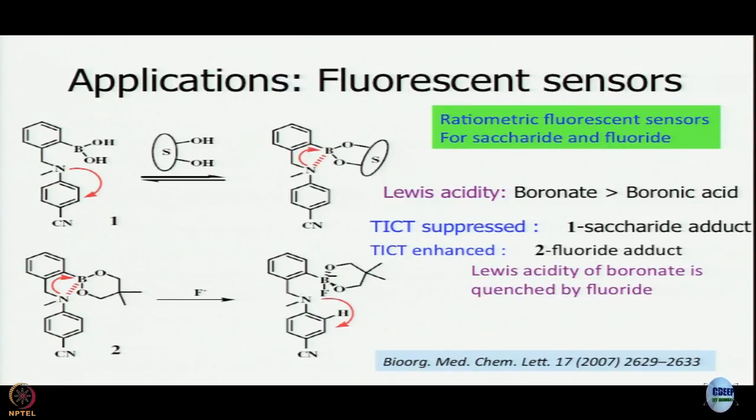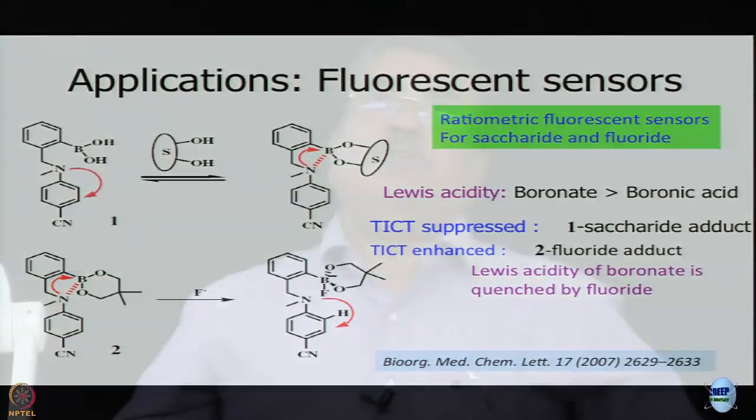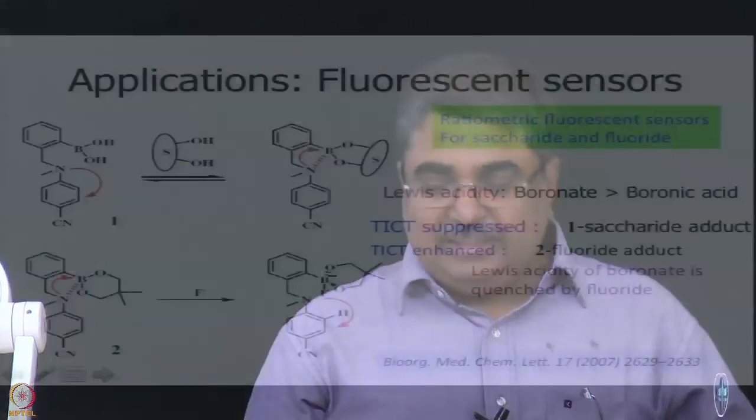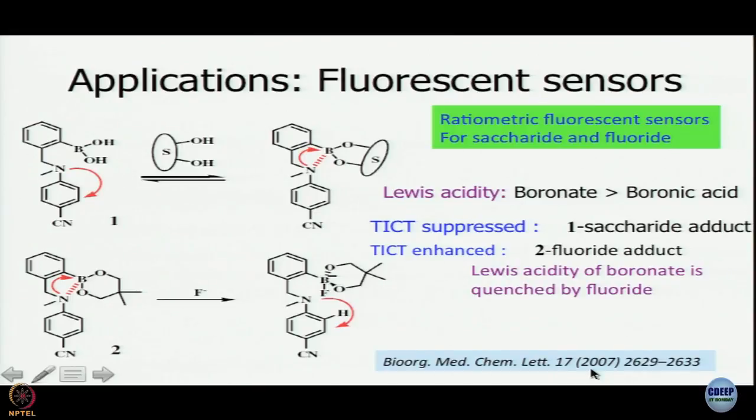There are many applications worked out. For example, the work of P.K. Bharadwaj at IIT Kanpur — they have made numerous sensors using an ICT molecule. Initially ICT is present and fluorescence is quenched. Then a metal ion is introduced, engaging the lone pair, ICT is stopped, and fluorescence shoots up. That is what makes turn-on sensors.